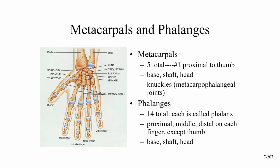There are 14 total phalanges (each individual bone is a phalanx). Each finger has a proximal, middle, and distal phalanx — except the thumb, which only has a proximal and distal phalanx with no middle. The thumb also has its own name: pollux.